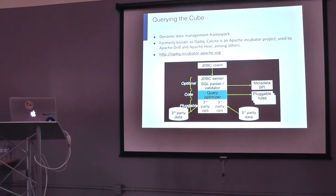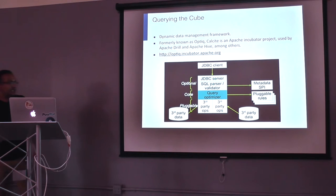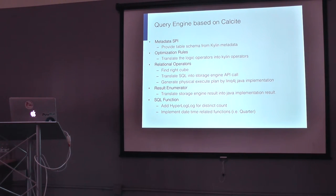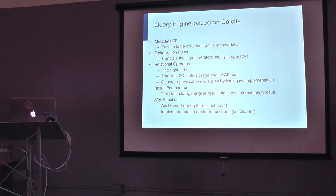The query optimizer is aware that HBase can handle the pushdown, so Calcite hands it off rather than computing it. In the third layer you have the data storage APIs — given a key, get me the value; given a range, get me all enumerated results. What we did was implement these plugins: a metadata SPI, a set of relational operators — selects, where clauses, group-bys — that given a select table find the specific HBase table and cube to talk to, translating the SQL into storage API calls.